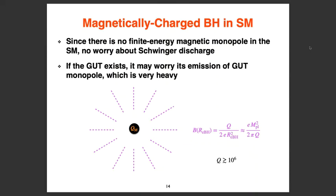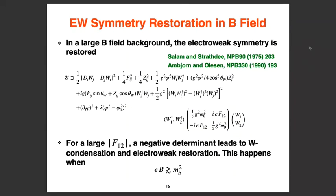For a magnetically charged black hole, there is no finite-energy monopole object to discharge it through, so we don't need to worry as much about magnetic Schwinger discharge — unless there is a dark monopole in the spectrum. If we assume only the standard model plus GR, there is no such object and the magnetic charge Q can be up to order one or two in Planck units.